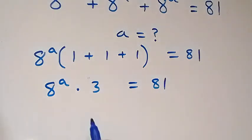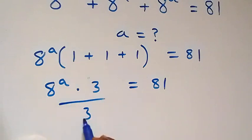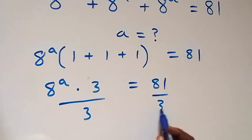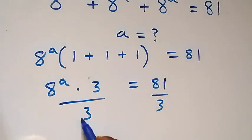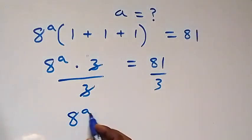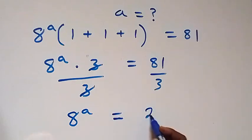The next step: we can divide both sides by 3, also this side by 3, then 3 cancels out here. We get 8 raised to power a equals 81 divided by 3, which gives us 27.